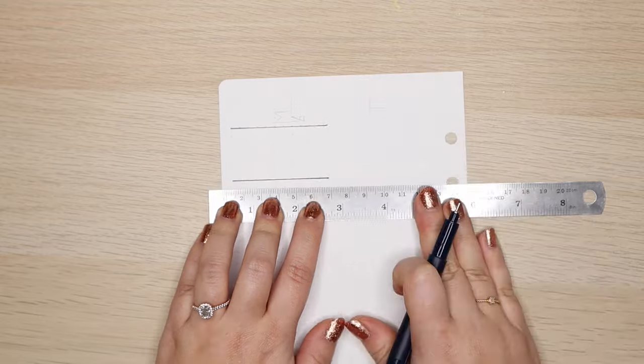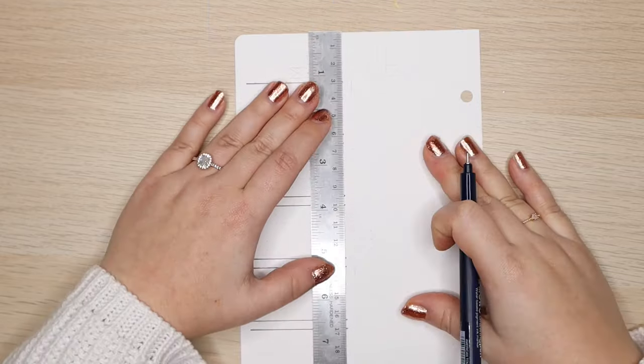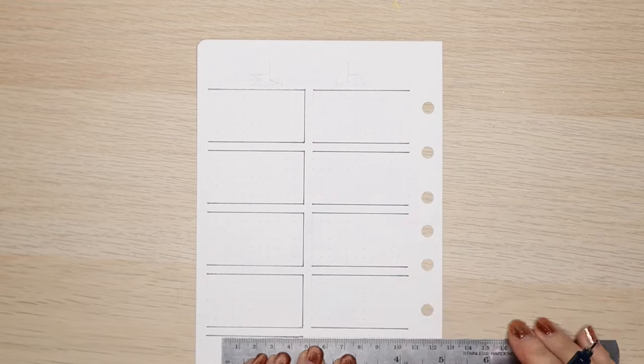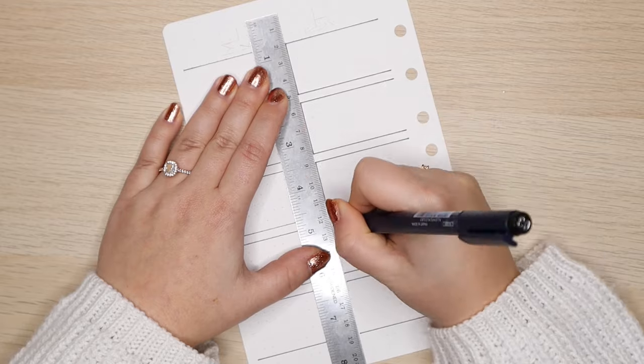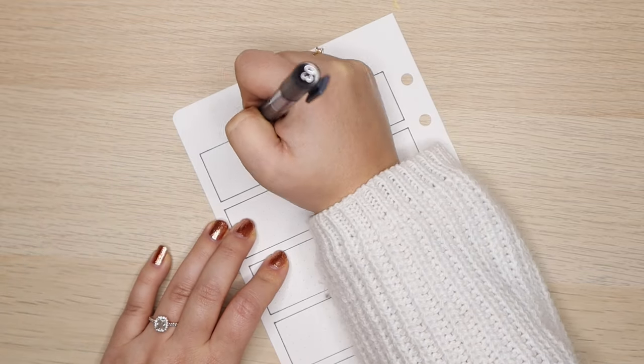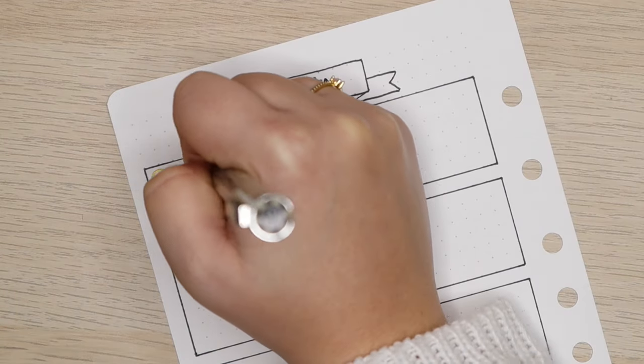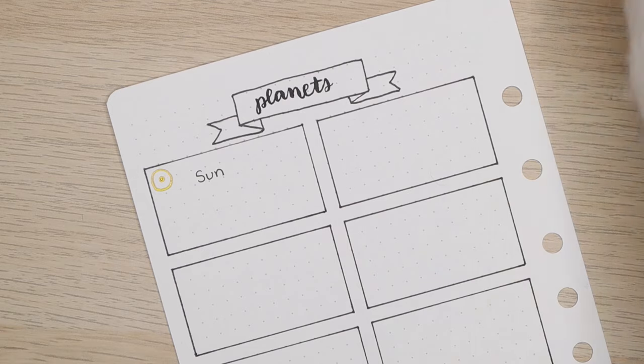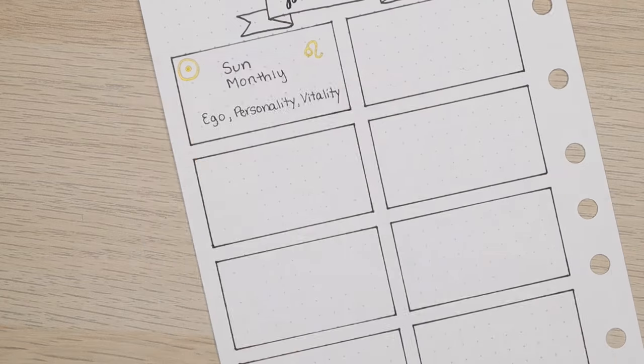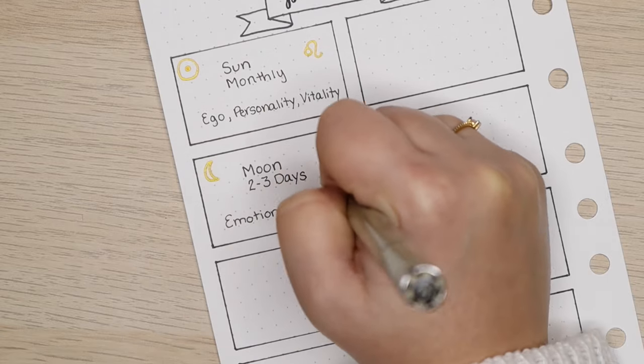This next spread is all about the planets as they relate to astrology. Now I realize by scientific definition, the sun and the moon are not considered planets. However, in astrology, they function the same. This spread is meant to be a quick reference about the pertinent information you might need to know. In astrology, each planet symbolizes something in our lives and rules over a different part of our psyche. What you want to know is how long it takes for them to transit between signs, what sign they rule over, and what parts of your personality they are associated with.